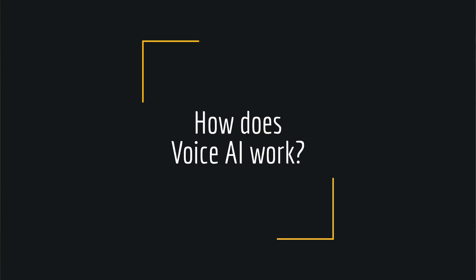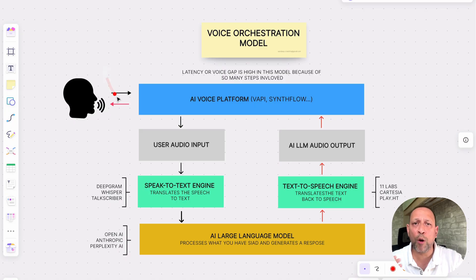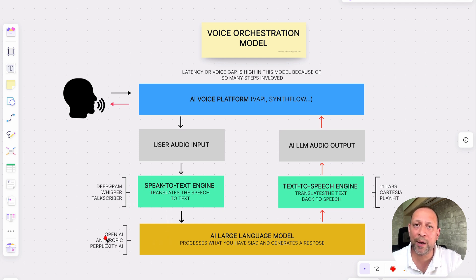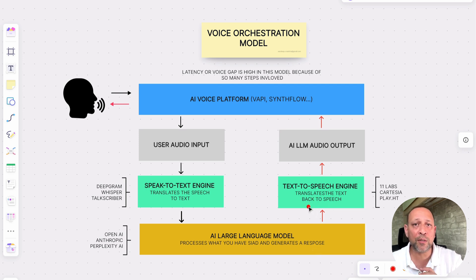How does voice AI work? In the voice orchestration model, when you talk to a voice assistant, your spoken words are first turned into text using a speech-to-text engine. This engine might be powered by services like Deepgram, Whisper, or some other service. Then this text is processed by AI models such as OpenAI, Anthropic, or some other large language model, which interprets the meaning and context of your words. After the AI processes what you've said, it generates a response, which is sent back as text and then converted into speech by a text-to-speech engine like Eleven Labs or PlayHT.